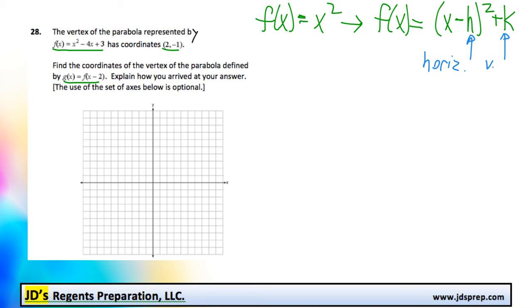and the k value tells us how much it has translated vertically. So, because we're finding f of x minus 2, that's our h value here, because it's in the brackets,